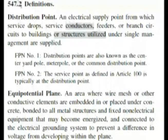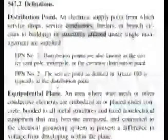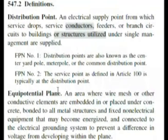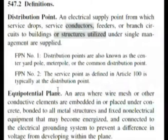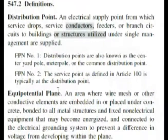Here we are at 547.2. It says definitions, and here we have equipotential plane. So again, not all definitions are in Article 100. Article 547 deals with agricultural buildings, but that was not part of the question and we don't need that information for the answer.